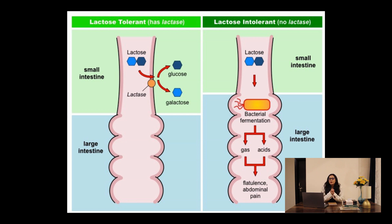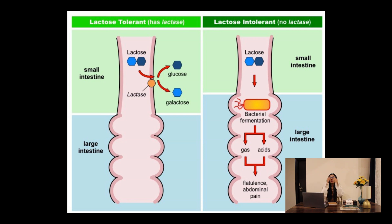Lactose intolerance is the condition in which our body is not able to digest lactose. Lactose is a sugar that is found in milk and other dairy products. Those who are lactose intolerant are unable to break down lactose into simple sugars, which we call glucose and galactose, and that is why it passes through our digestive system undigested.